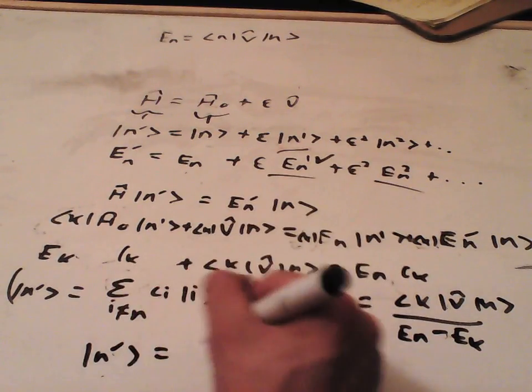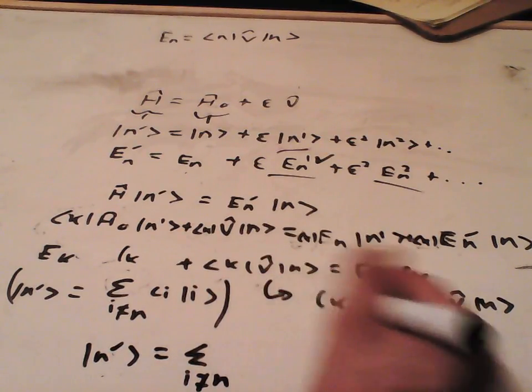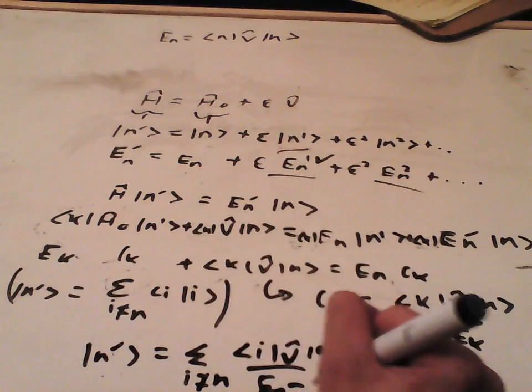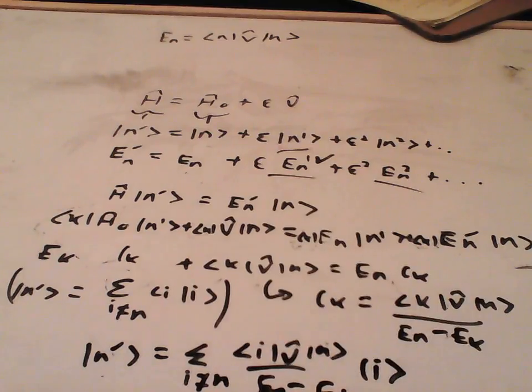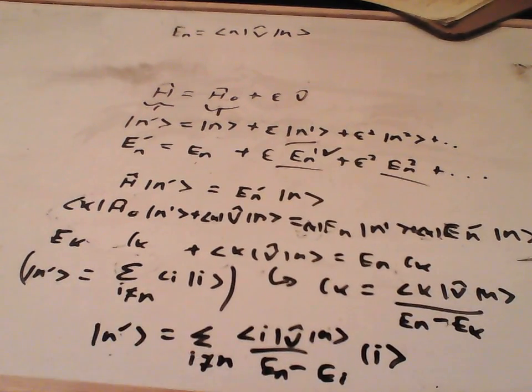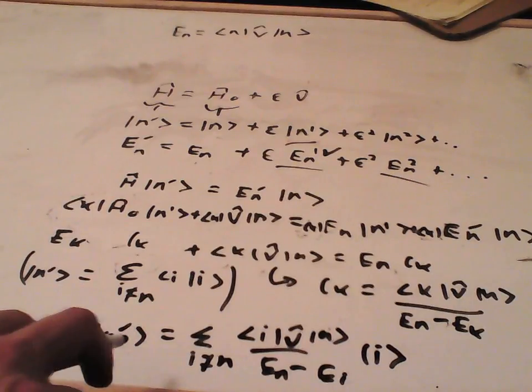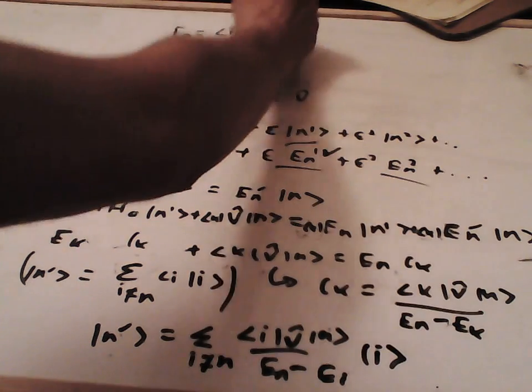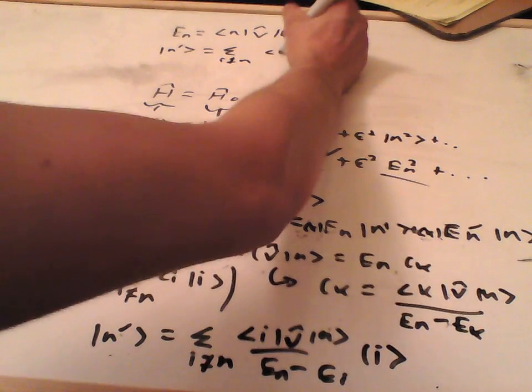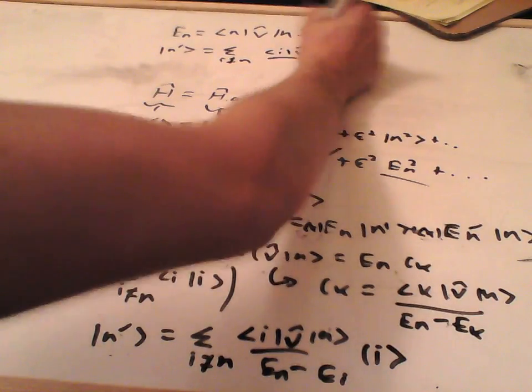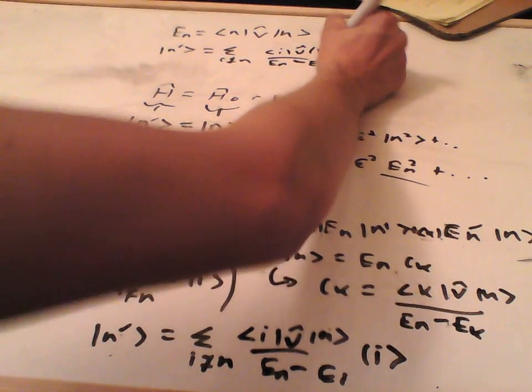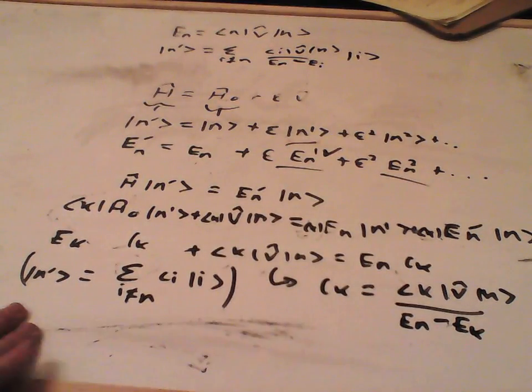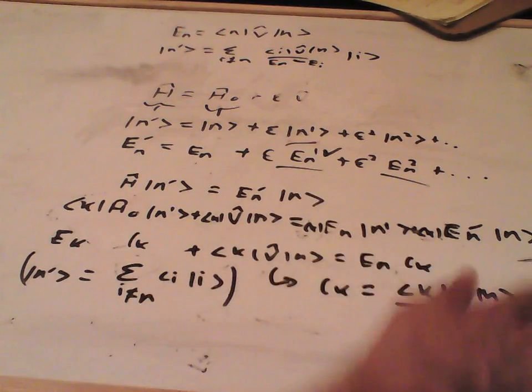Notice it's n first on the bottom, but n second on the top. And that means that we have found this n1. Because this n1 is therefore equal to the sum over i, not equal to n, of i V n over En minus Ei times by i. So that's our second result. And we are going to put that up here with our first result. And we don't need that now. We now need to go to higher orders. Specifically the second order.